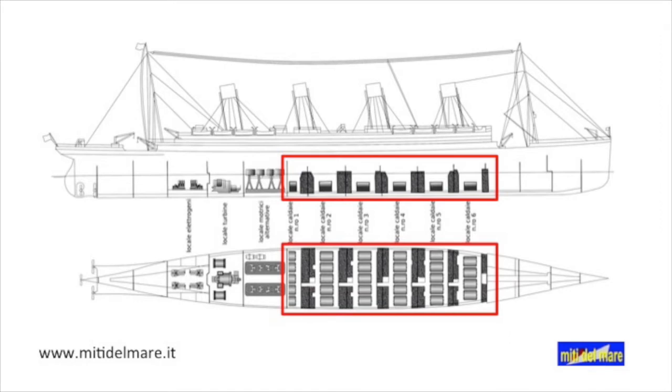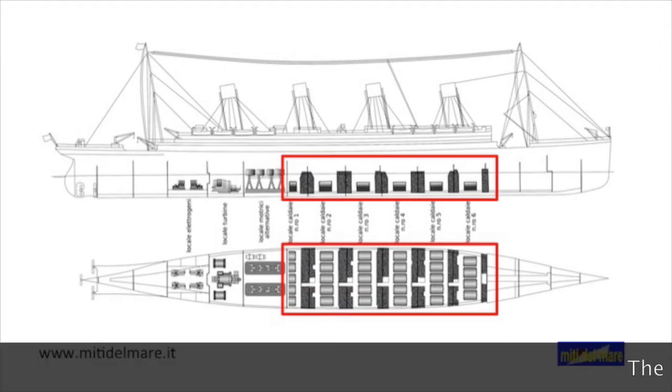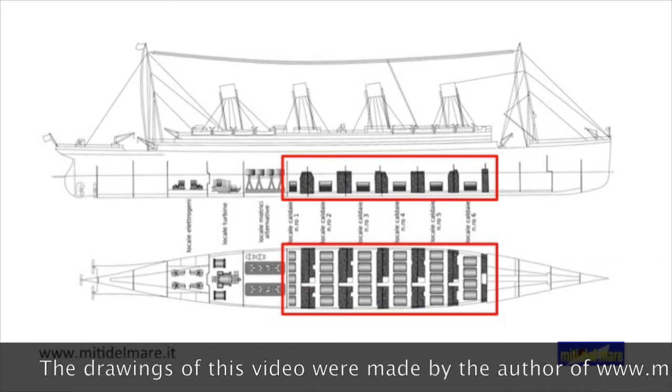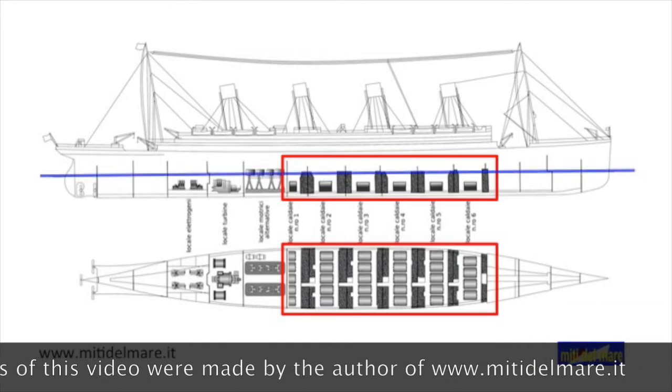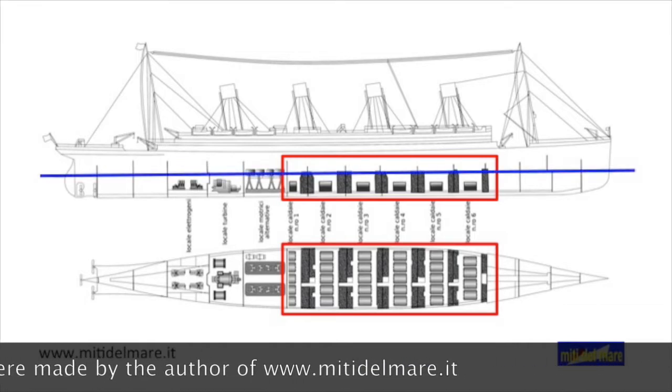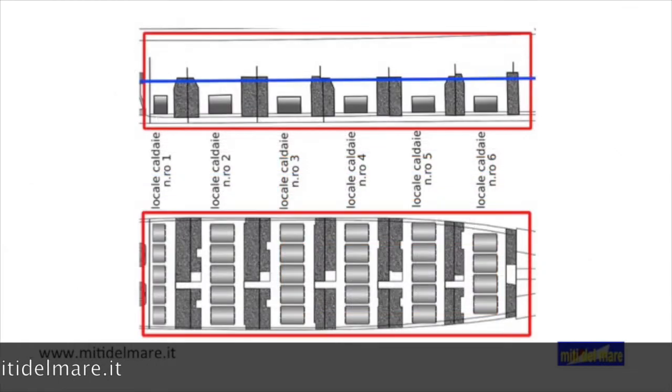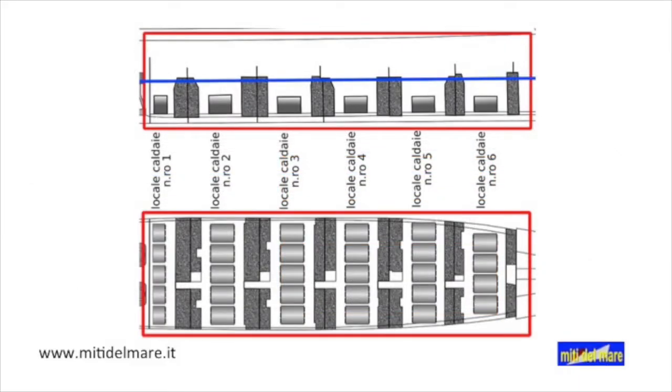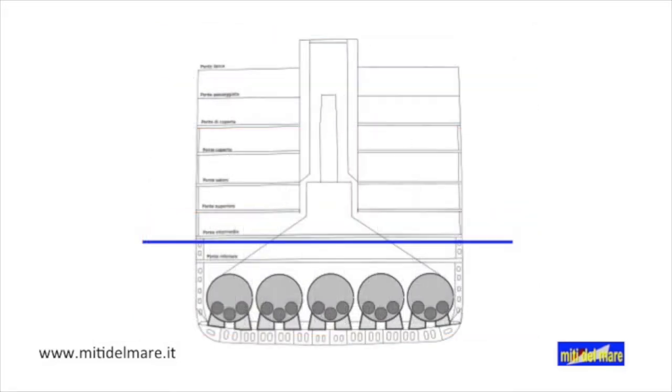On the Titanic were installed 29 flame-pipe cylindrical boilers, known as Scottish boilers, with a total of 159 furnaces. All the complex was virtually below the floating line. The boilers were distributed in six compartments numbered from the engine room, were powered by coal, and had the working pressure of 215 pounds per square inch.